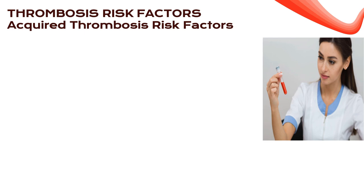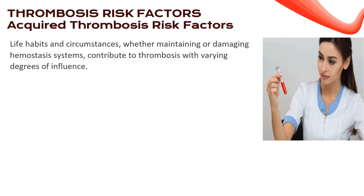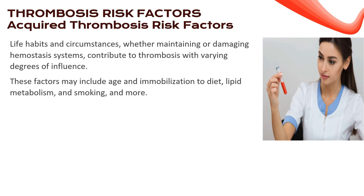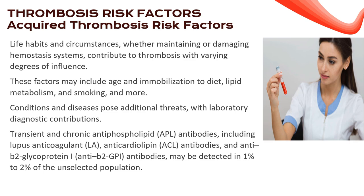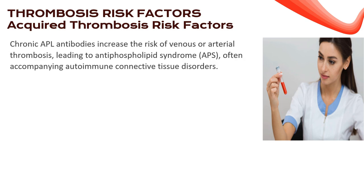Life habits and circumstances play a crucial role in either maintaining or damaging our hemostasis systems, influencing thrombosis risk. From age and immobilization to diet, lipid metabolism, and smoking, these factors interact in a complex dance. Transient and chronic antiphospholipid antibodies, including lupus anticoagulant and anticardiolipin antibodies, may be present in about 1% to 2% of the population. Chronic APL antibodies increase the risk of venous or arterial thrombosis and can lead to antiphospholipid syndrome (APS), which often accompanies autoimmune connective tissue disorders.